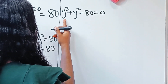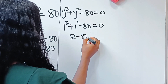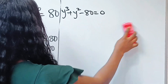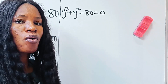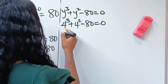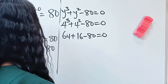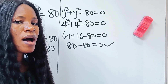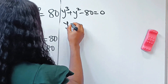If we let y equal 1: 1 to the power of 3 plus 1 squared minus 80 gives us 2 minus 80, which is not 0. Trying 2 and 3 also won't work. But if we try 4: 4 to the power of 3 is 64, plus 4 squared which is 16, minus 80 equals 0. So 64 plus 16 is 80, minus 80 is 0 — true. That means y equals 4 is the first root.